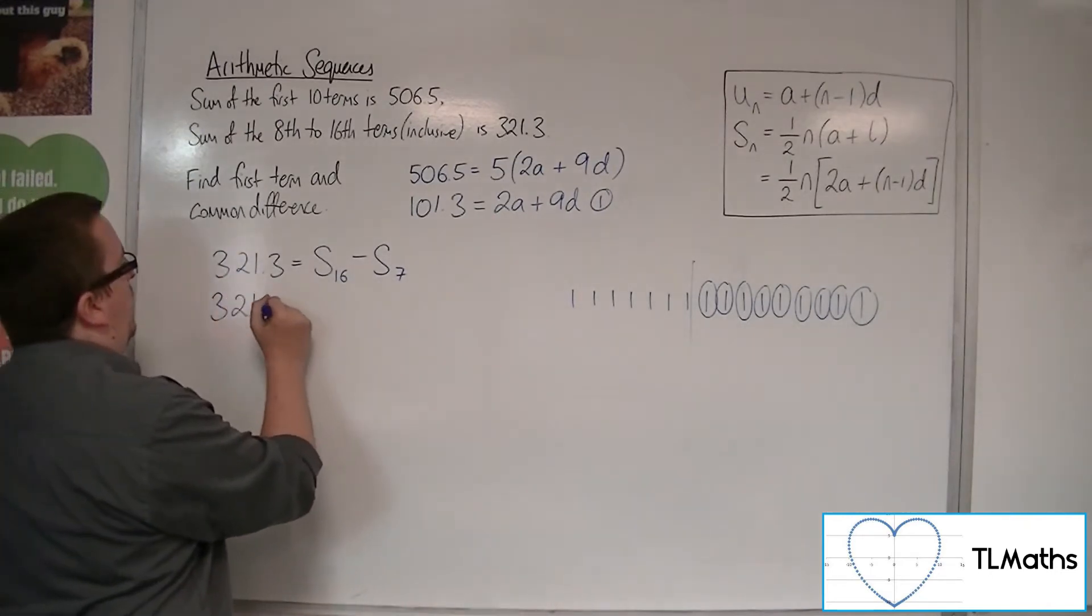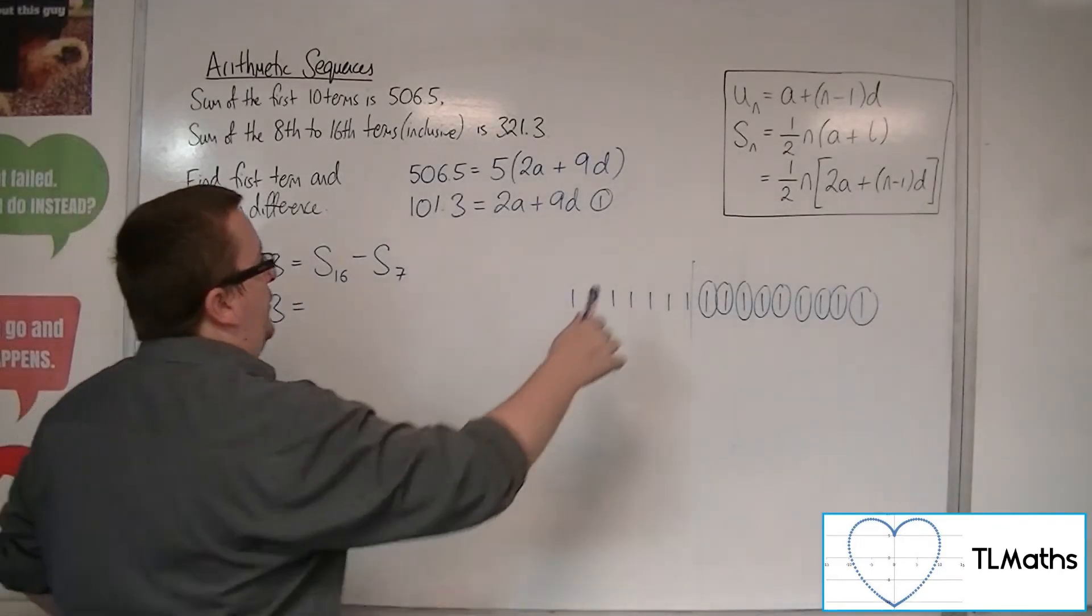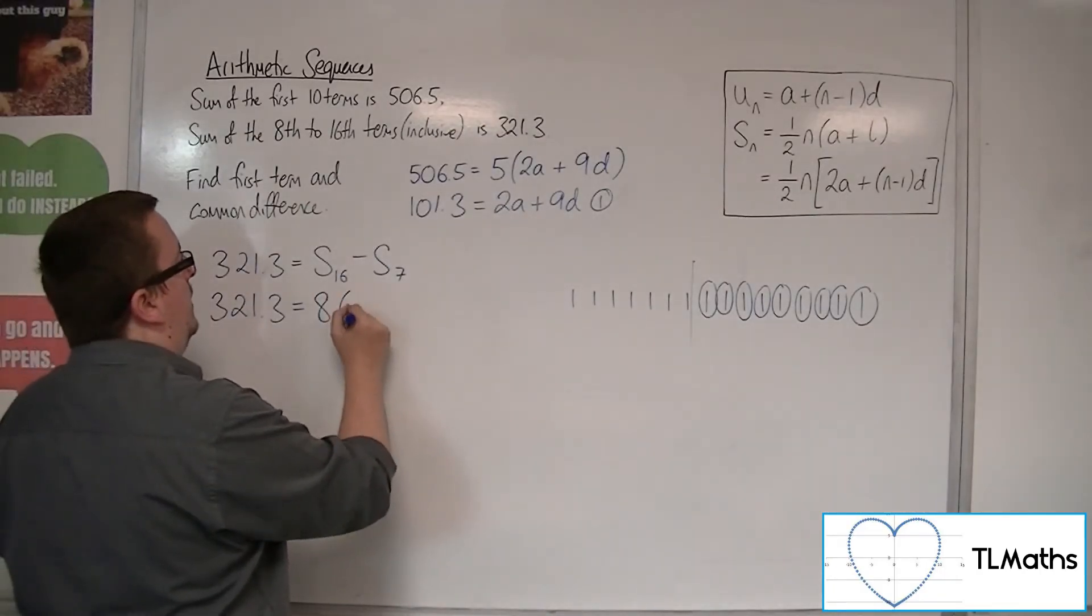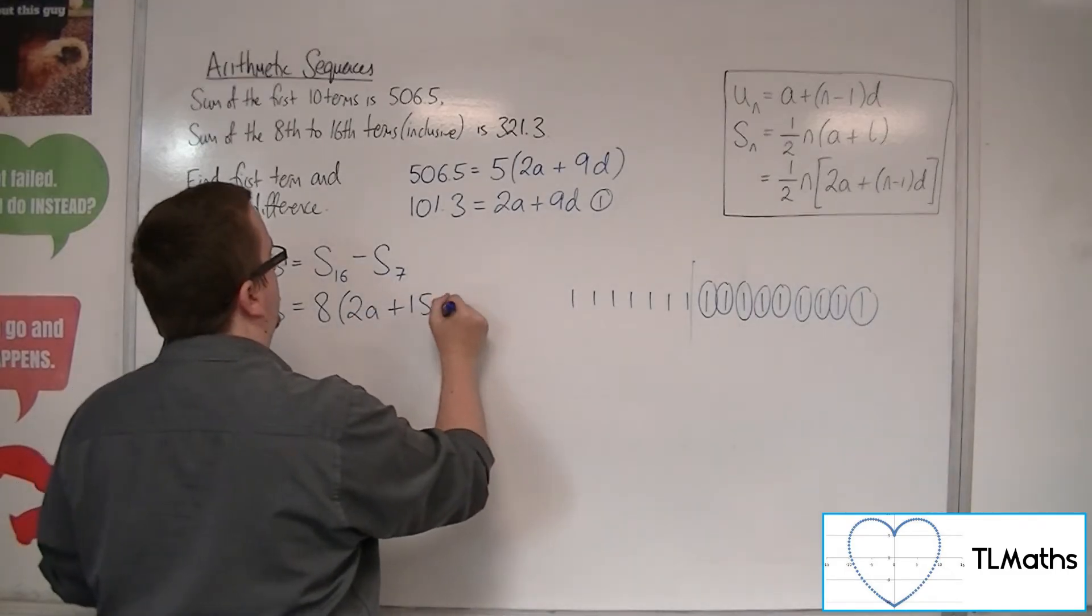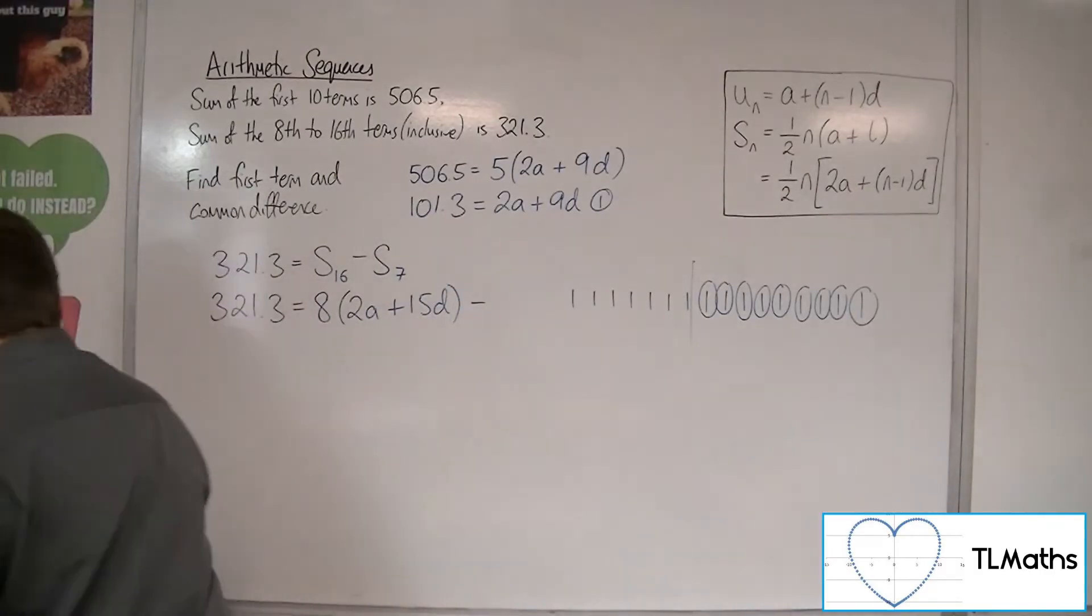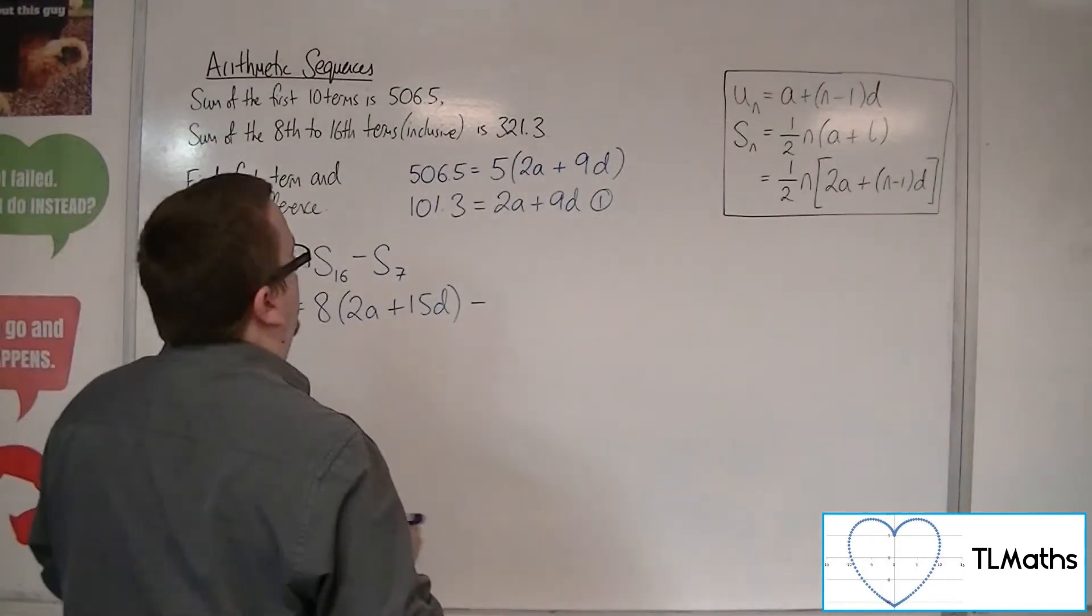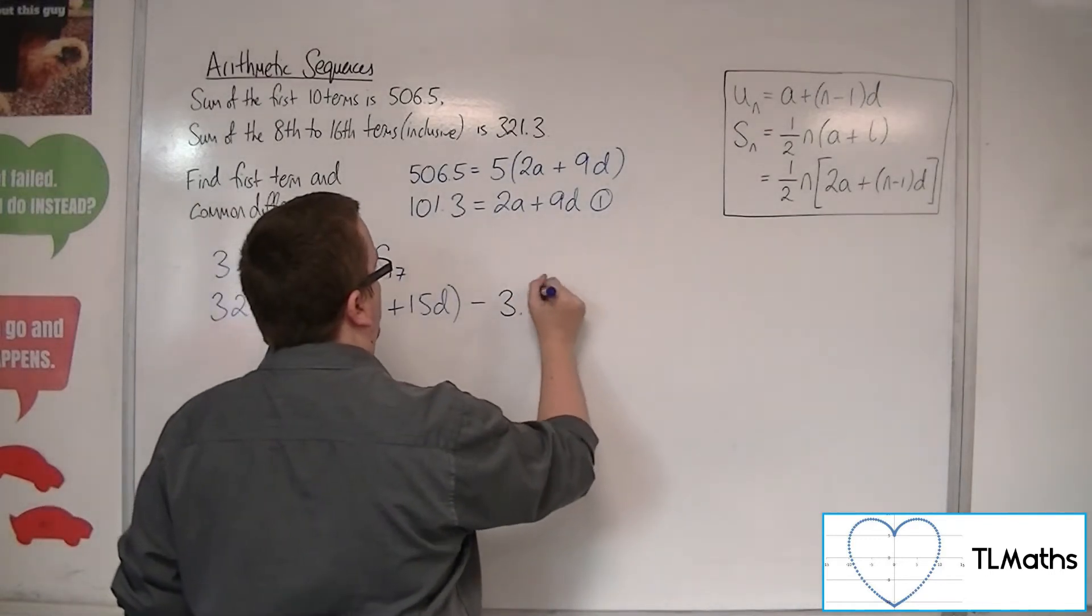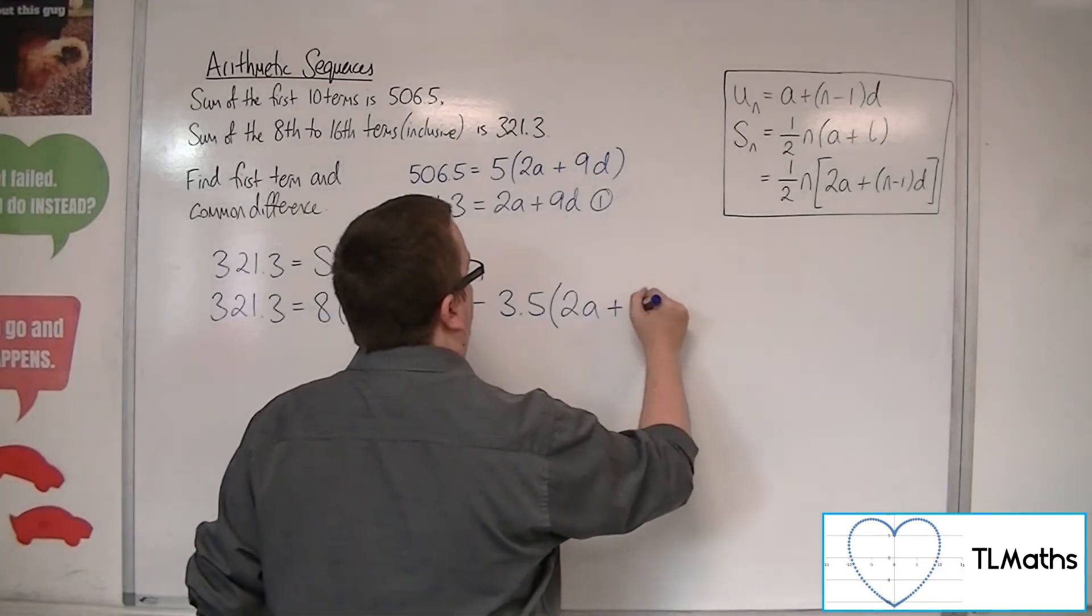So, 321.3 is equal to, well, S16, using this formula again, is a half times 16, so 8 times by 2a plus n minus 1, so 15d. So that is S16, take away S7. So we've got a half of 7, so 3.5, times by 2a plus n minus 1, so 6d.